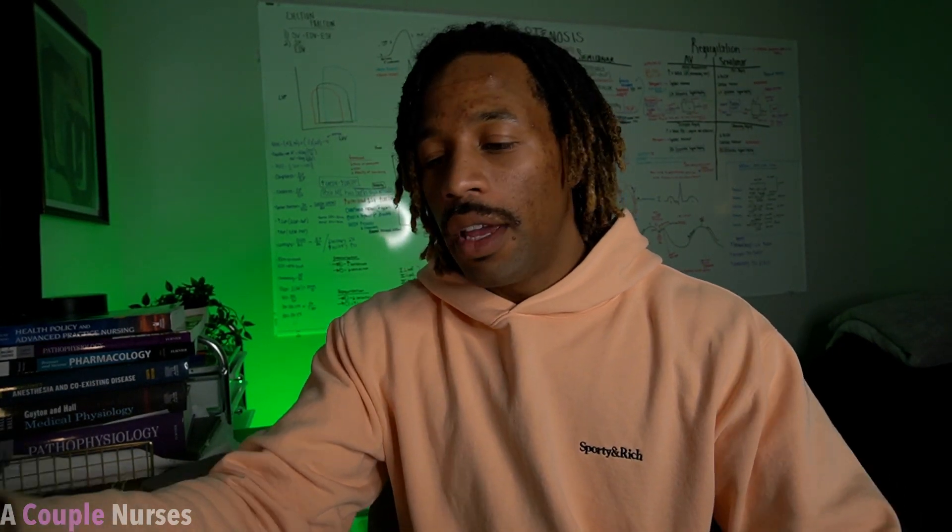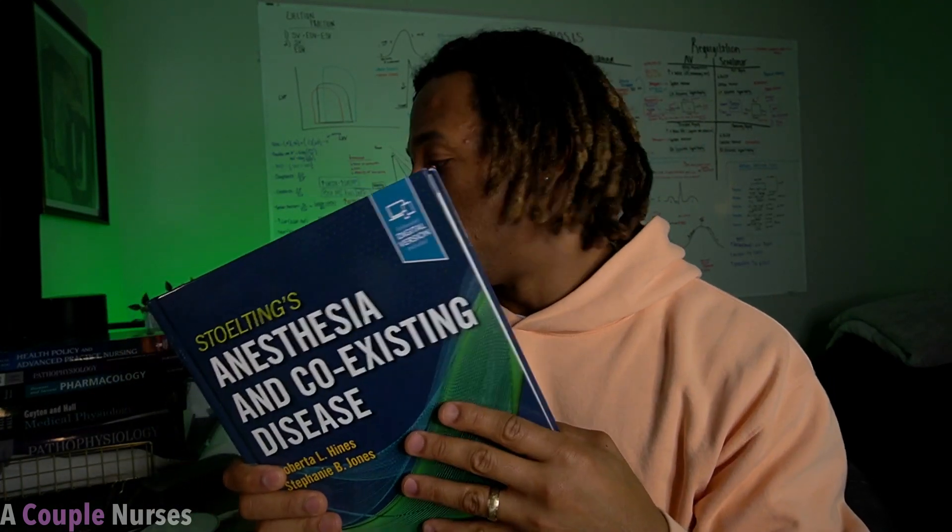I'm going to show you guys my books ordered from what I used the most to what I used the least. The very first book is Stoelting's Anesthesia and Coexisting Diseases. Pretty much what this book does is break down the pathophysiology of all these disease processes and show you how they're related to anesthesia — how airway is affected, how circulation is affected. I definitely used this book more than anything.